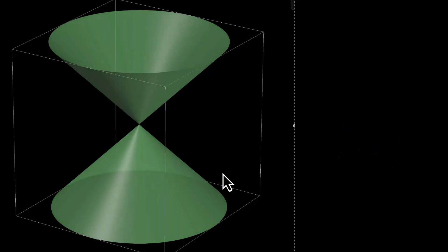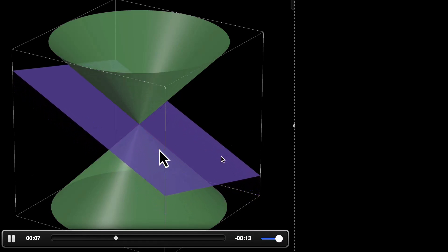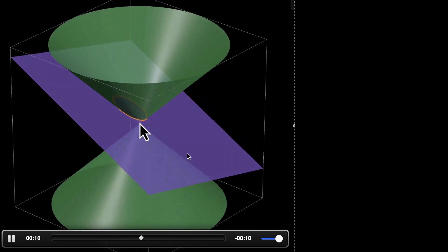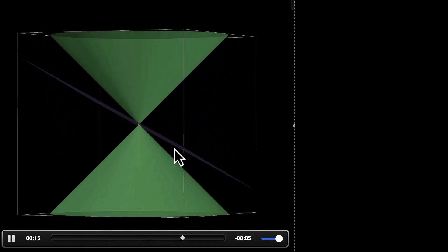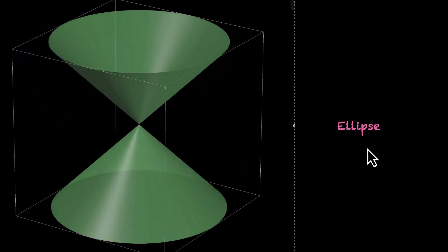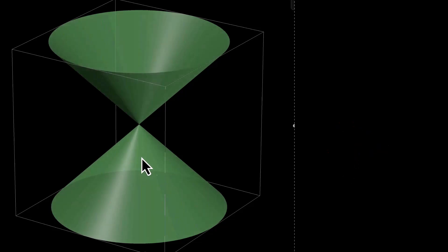Let's look at another case. Now, this plane is inclined, and we no longer get a circle — we get something else. We see something oval, and the technical term for this is called an ellipse. How do we define an ellipse using the angle that this plane makes? If you look closely, this angle beta is less than 90 but more than alpha. The plane makes an angle more than alpha but less than 90 for the ellipse.